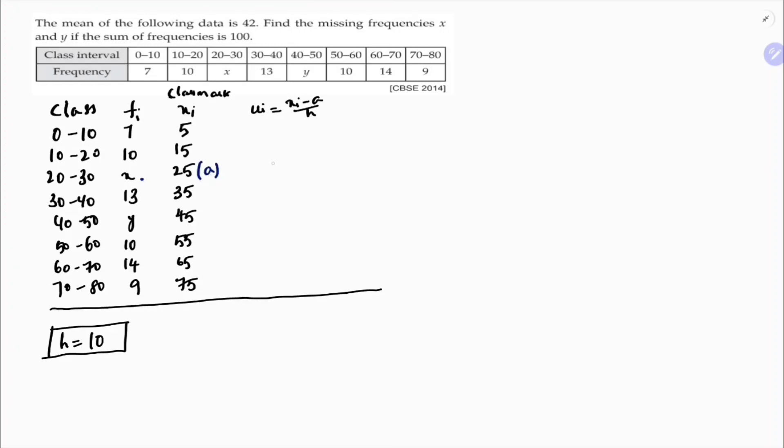So if I will assume this value as a, so here UI value will be 0, minus 1, minus 2, 1, 2, 3, 4, 5. So if the value, see if the classes are in ascending order, and wherever you will assume a, besides that always you will get 0, minus 1, minus 2, then 1, 2, 3, 4, 5.